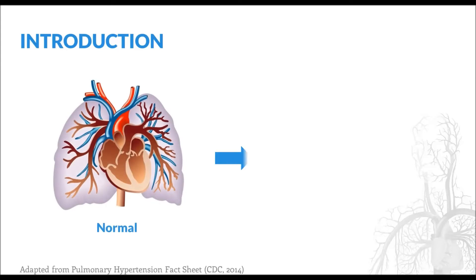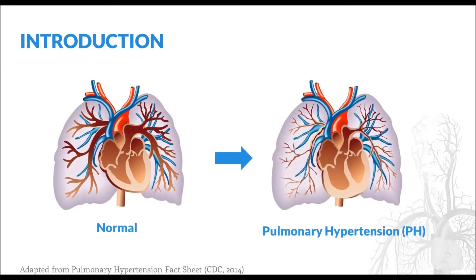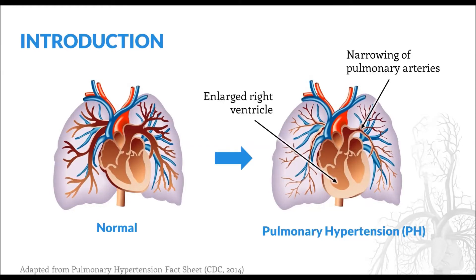To begin, pulmonary hypertension, or PH, is a clinical syndrome characterized by narrowing of the pulmonary arteries. The increased pressure that often results can produce enlargement of the right ventricle and, in many advanced cases, right ventricular failure.